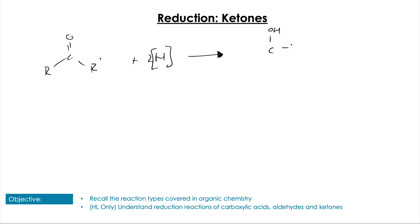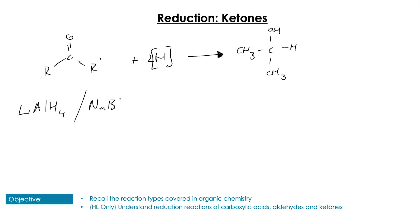If those two R groups were both CH3, for example, then we would form the secondary alcohol. For the ketone reduction, we can use either the sodium or the lithium reducing agent — either is fine here.